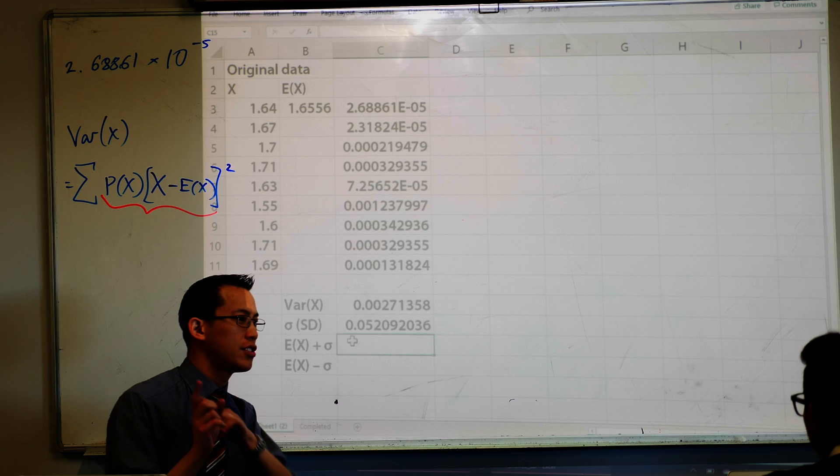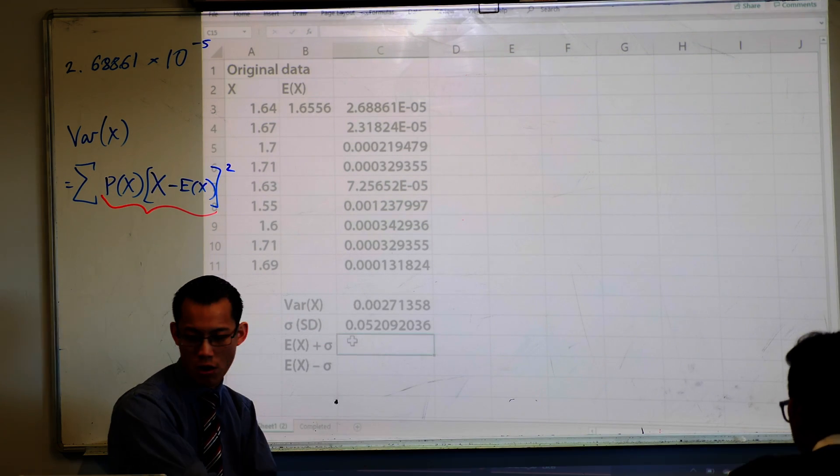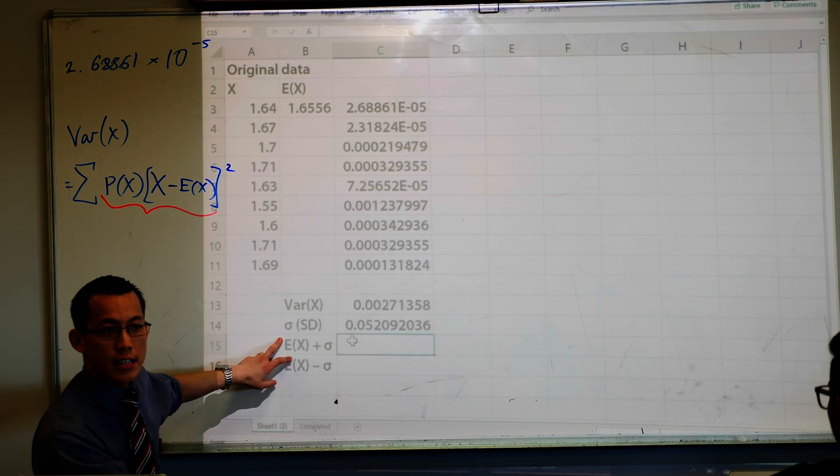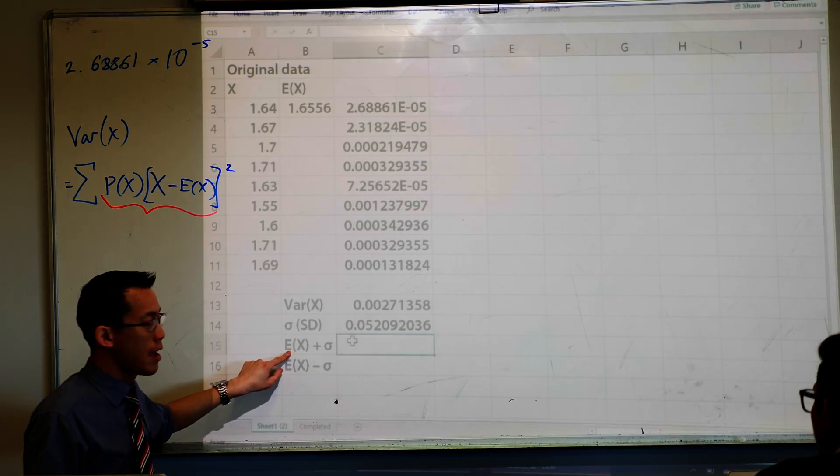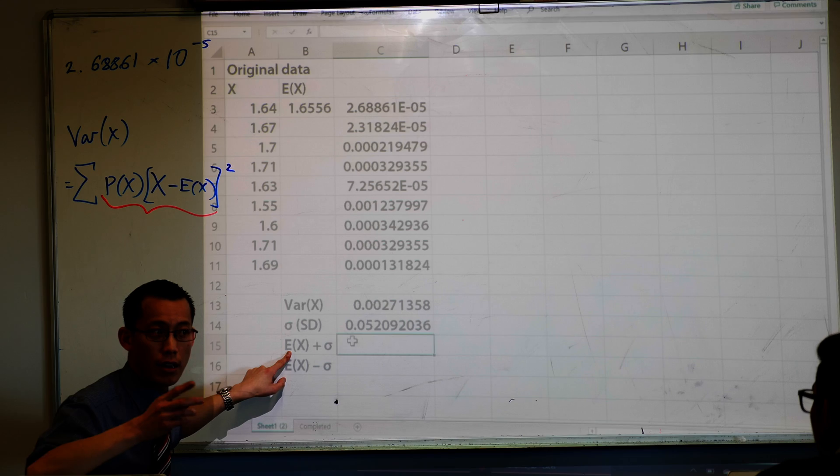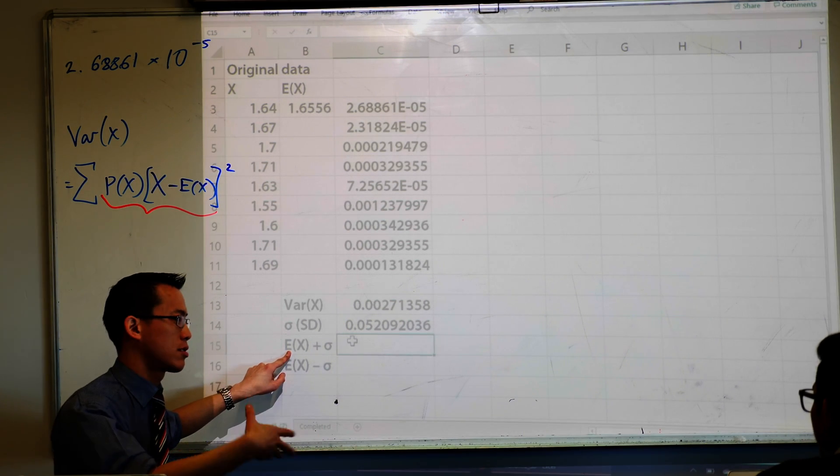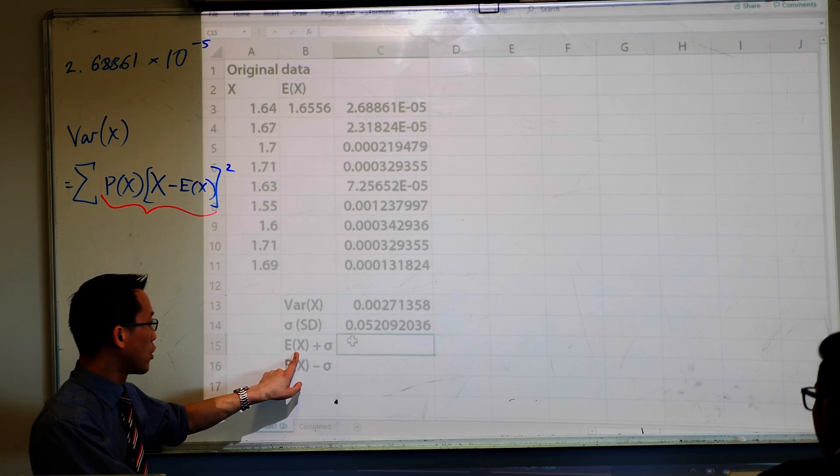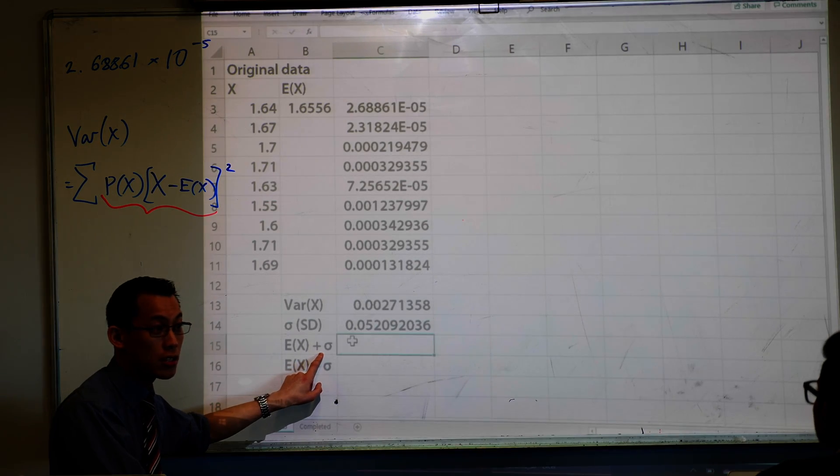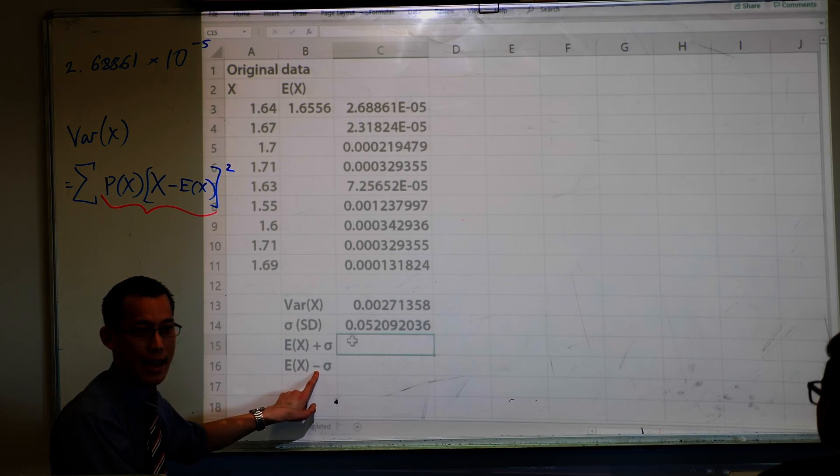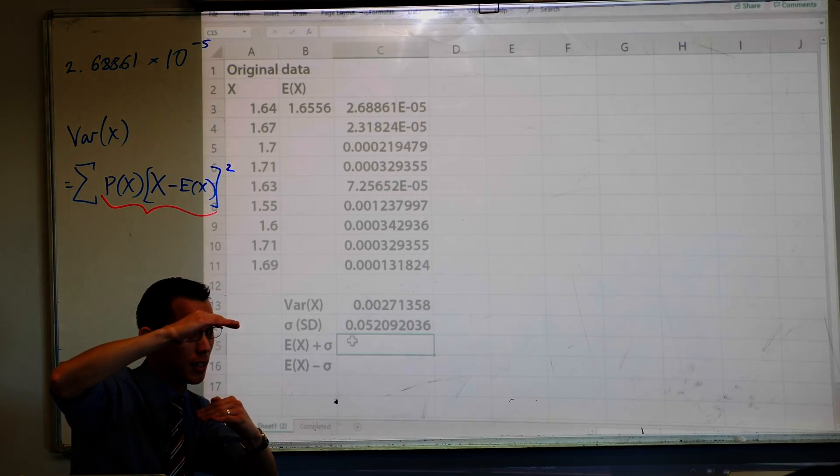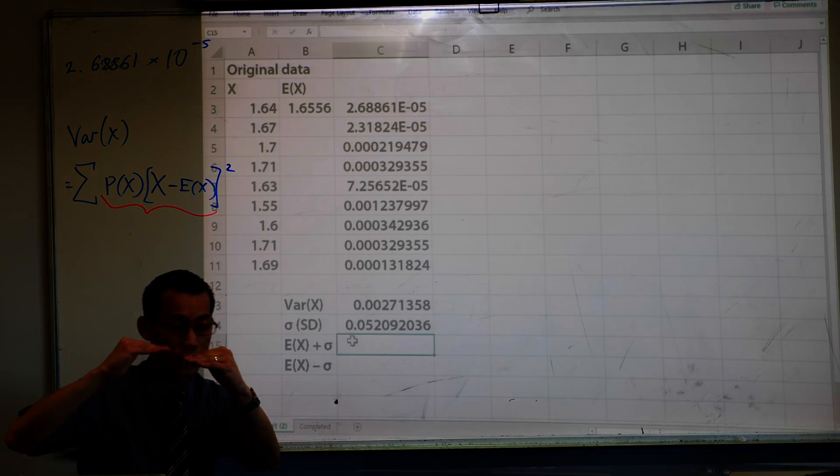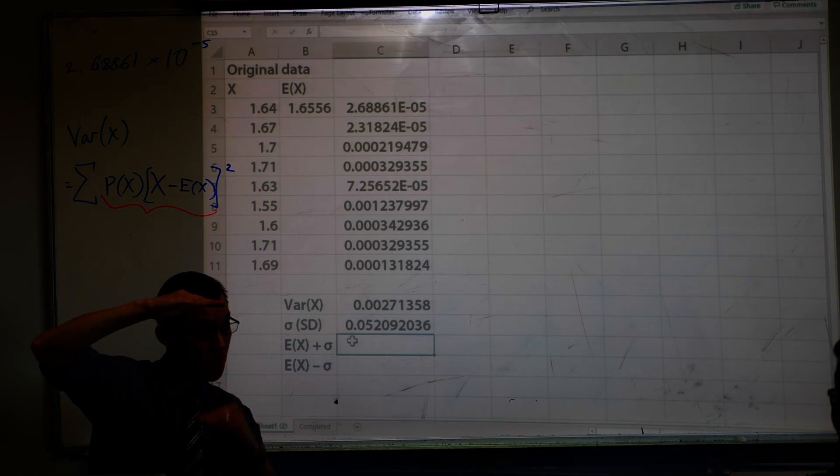Now I'm going to teach you something which is anticipating something we're going to learn later on. How do you read this? Have a look at what I've written down here. I want you to read it with me. E(x) is the expected value, or in this case, it's also the same as the mean. Then I've got the mean plus a standard deviation, and the mean take away the standard deviation. So what I'm looking at is, what's the middle of my data? Like smack bang in the middle, which is expected value, and then plus a bit, minus a bit.